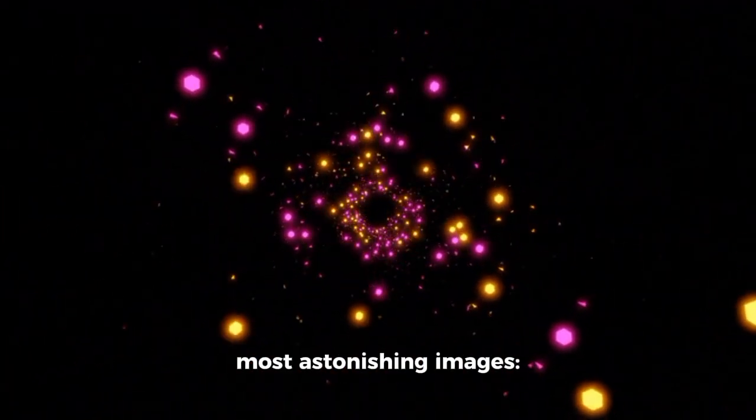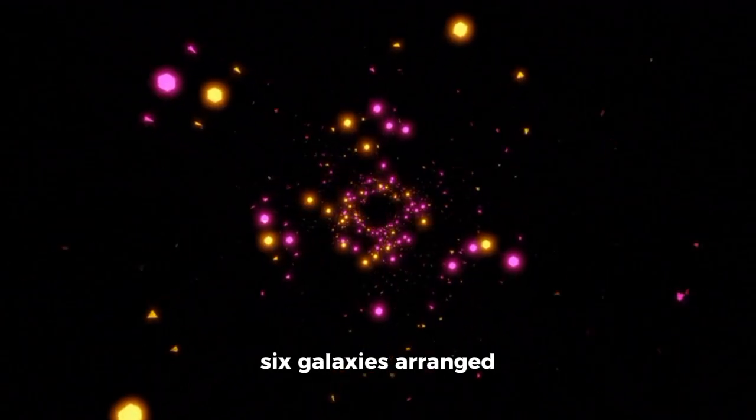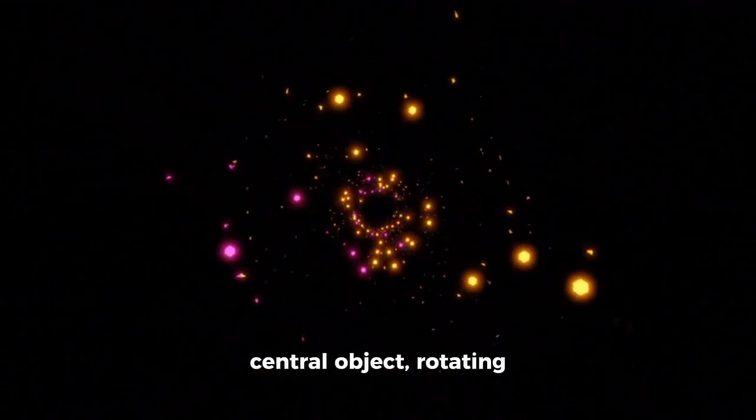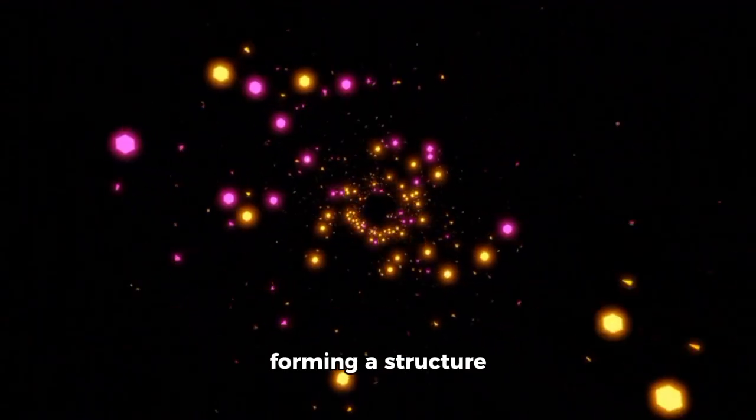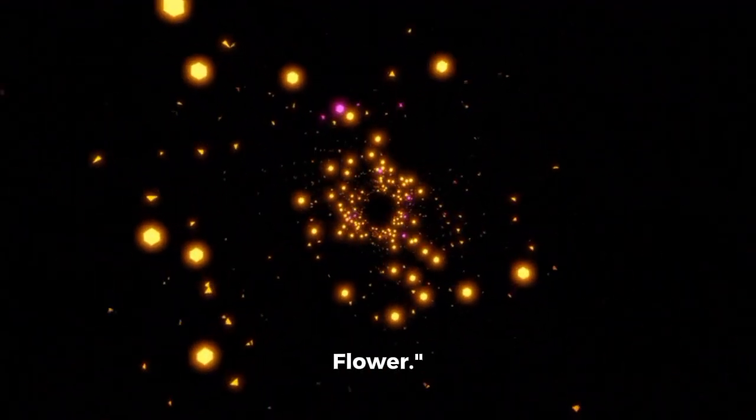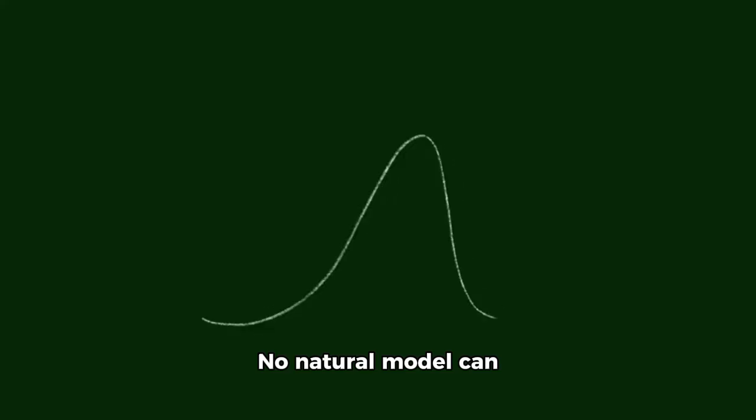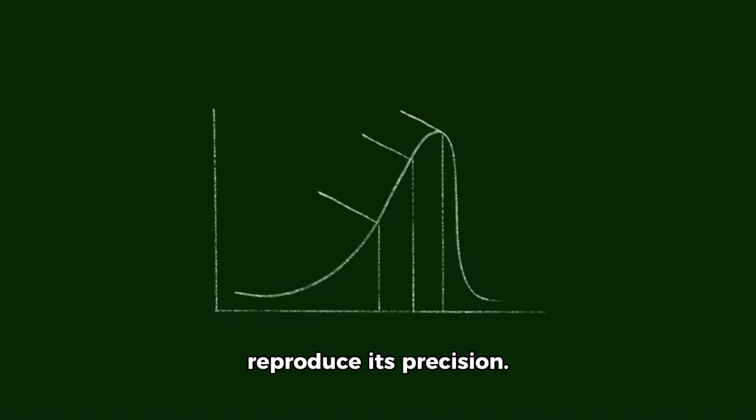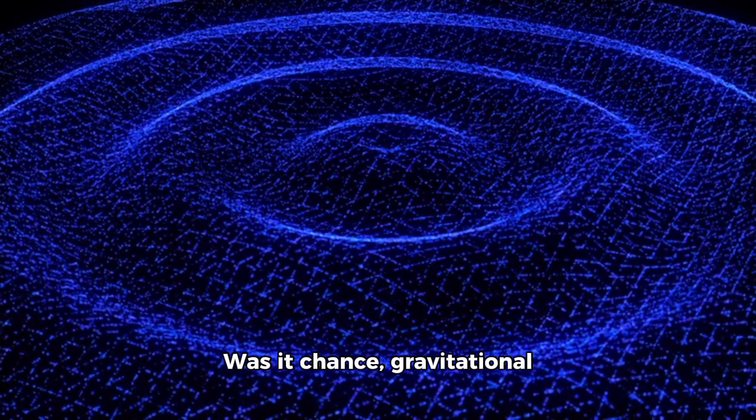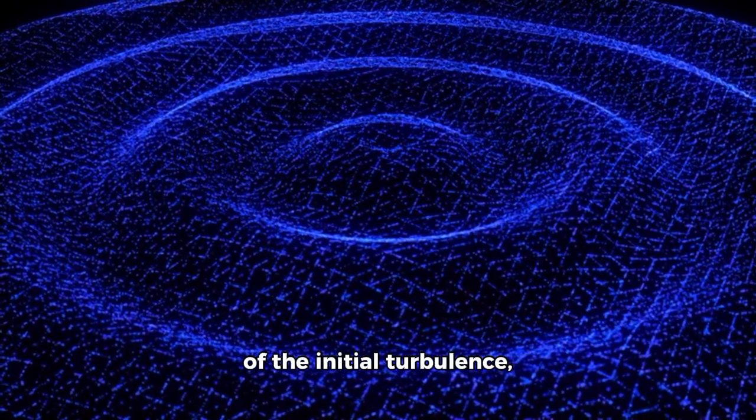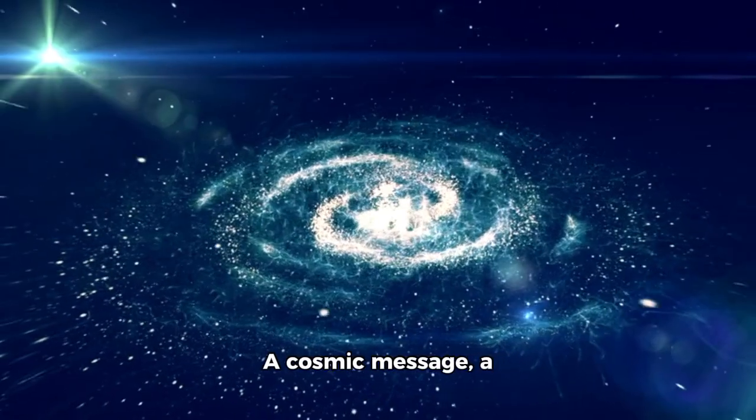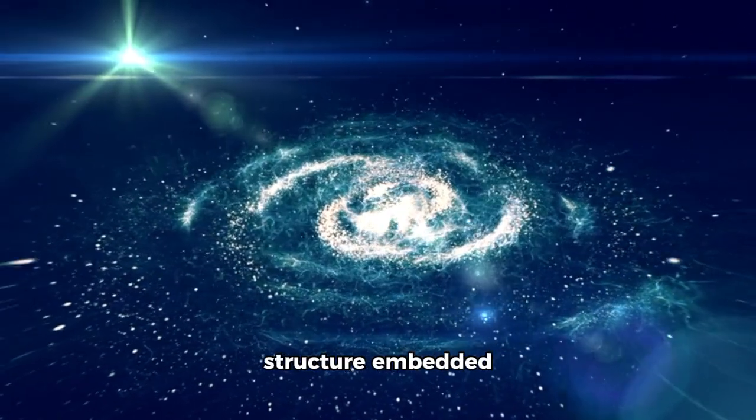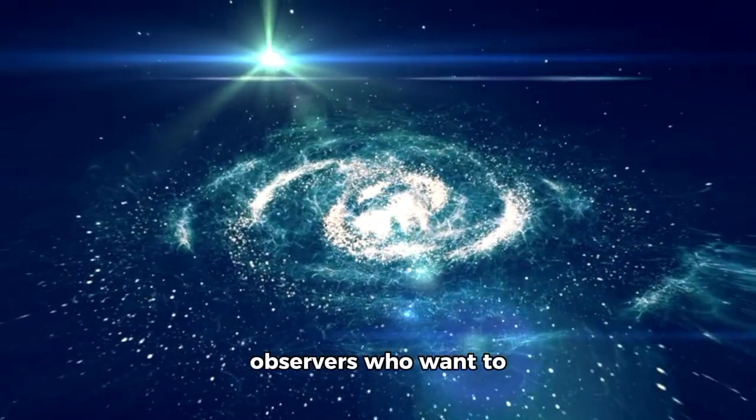Then came one of Webb's most astonishing images: six galaxies arranged like petals around a central object rotating in near-perfect harmony, forming a structure scientists now call the Flower. No natural model can reproduce its precision. Was it chance, gravitational coincidence, quantum traces of the initial turbulence, or something else? A cosmic message, a structure embedded intentionally for observers who want to find us.